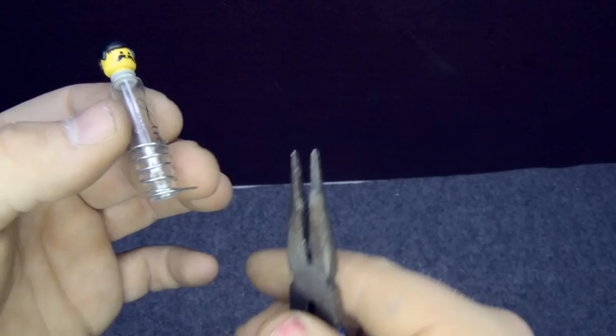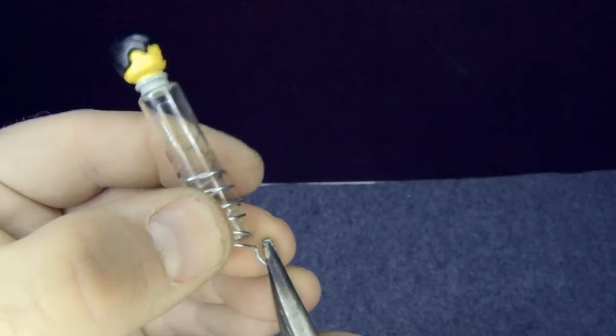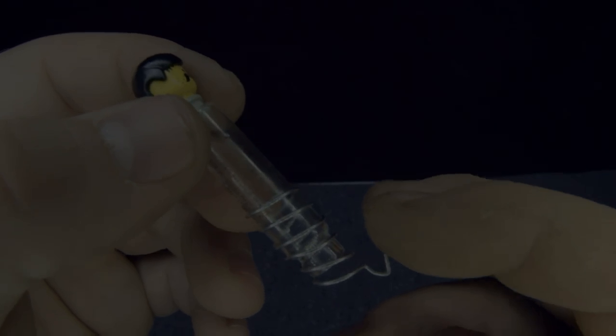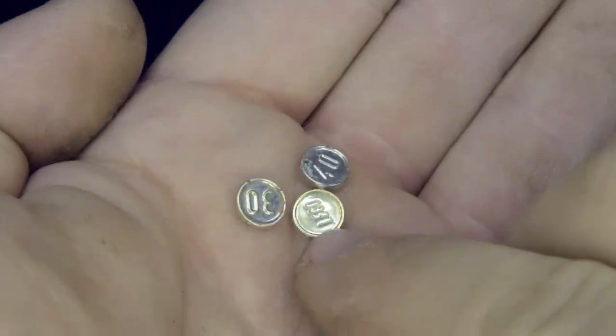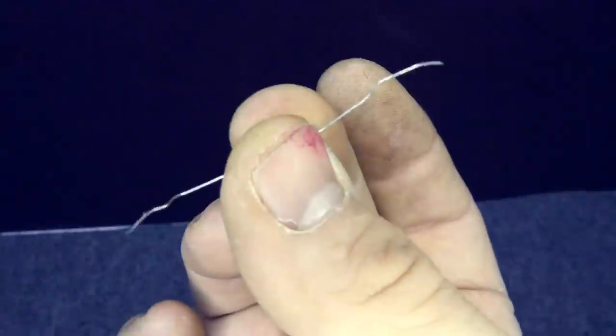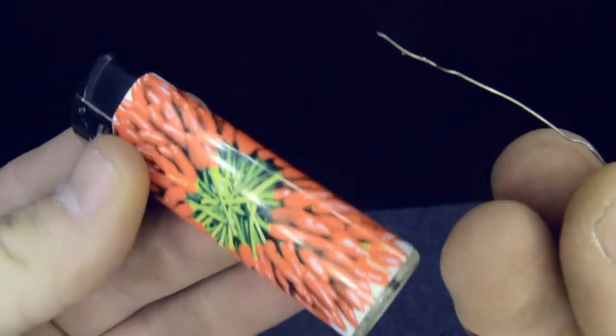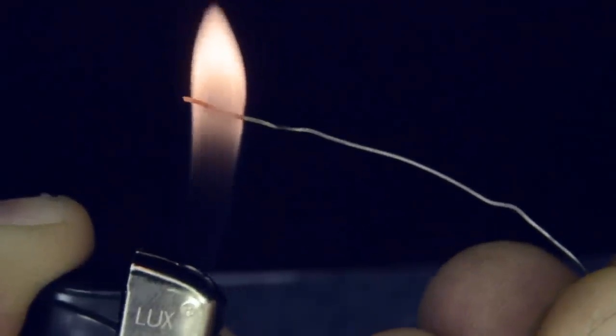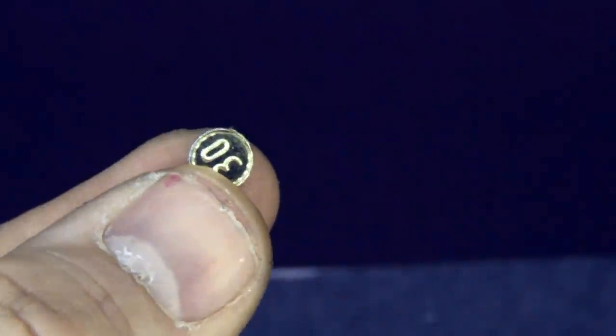Using some pliers we can bend the end of the metal wire and create a little hook, later you will understand why. Let's take the glass coins and using some metal wire and a lighter we can heat up the metal wire and use the heat to create a little hole in the plastic of the gold coin.